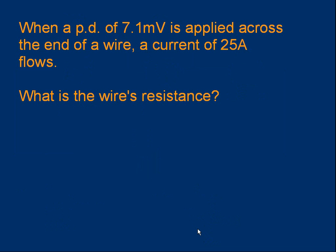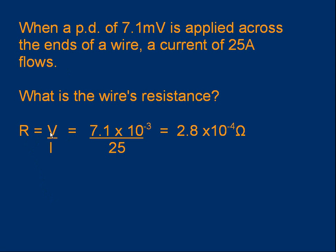Let's try some more, slightly more tricky calculations. This is where you'll probably need a calculator. Here's a question: when a potential difference, a voltage, of 7.1 millivolts is applied across the ends of a wire, a current of 25 amps flows. What is the wire's resistance? You want to pause the video and try this one for yourself? Okay, I hope you got this answer. Resistance is voltage over current. The voltage across the wire is 7.1 millivolts, that means 7.1 times 10 to the minus 3 volts, and we divide that by the current which is 25 amps, to give us 2.8 times 10 to the minus 4 ohms. You'll note that the data in the question, 7.1 and 25, were given to two significant figures. I've therefore rounded the final answer to two significant figures as well.